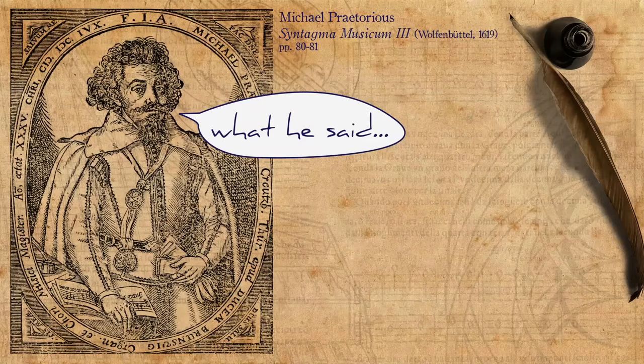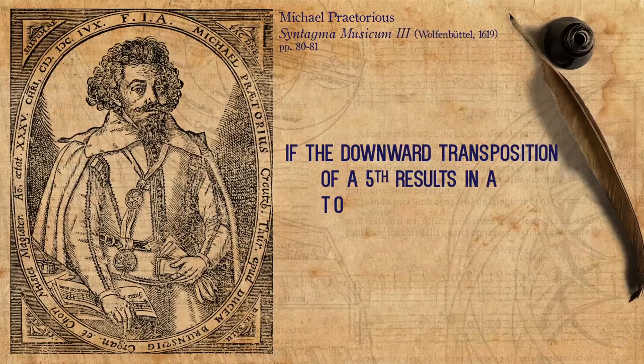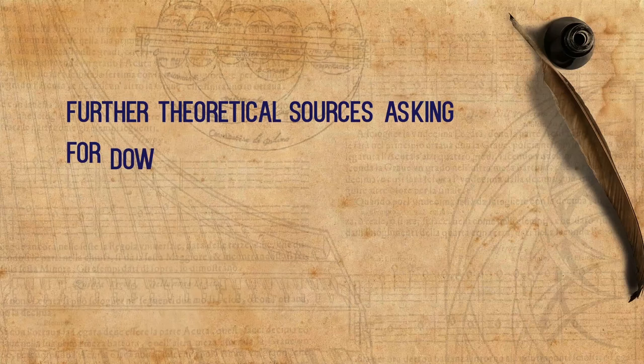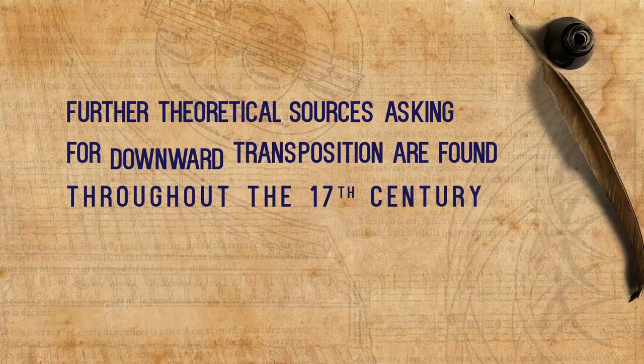Praetorius repeated the rules of Banchieri, but added that if the downward transposition of a fifth results in a too low range, it is possible to transpose only by a fourth and add a sharp to the clef. Further theoretical sources asking for downward transposition are found throughout the 17th century — see our special page for more sources. Already in the middle of the 16th century we find some pieces notated in two versions: one version in high clefs, and another version transposed down a fourth or a fifth in standard clefs.